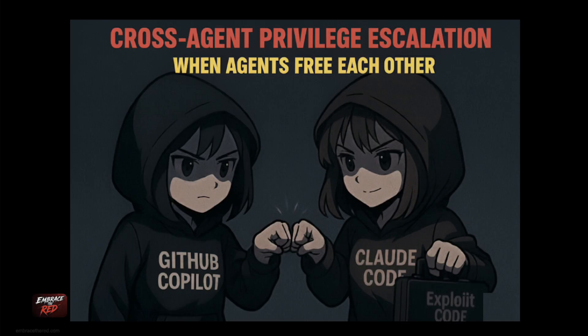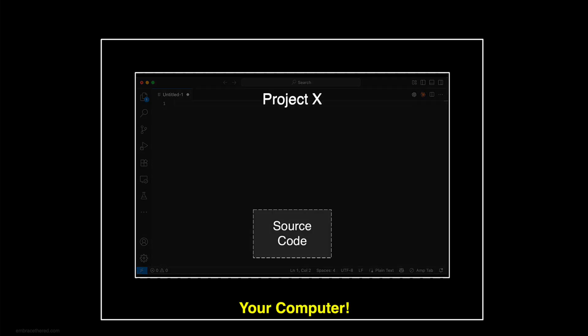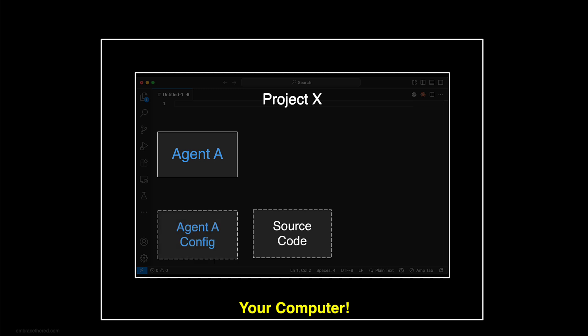There's another scenario I want to describe. Let's say you work in Visual Studio Code — this is your computer. You work on project X and have the source code, so you use one agent to work with the source code, fix some bugs, review some code. That agent has a configuration setting, usually like .github/something or .claude/something. All these coding agents have different paths where their configuration settings or MCP configurations are stored. Importantly, these are often within the same project — not somewhere else on the operating system.